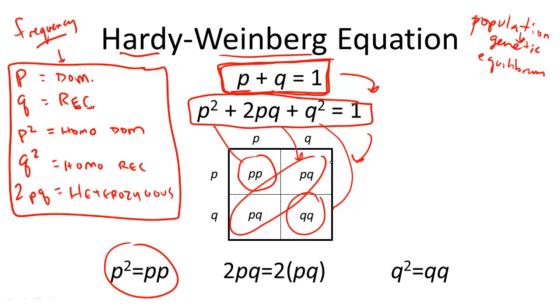So let's try a typical problem that you might see related to the Hardy-Weinberg equation. Let's say that the frequency in squirrels for being homozygous dominant for gray fur color.